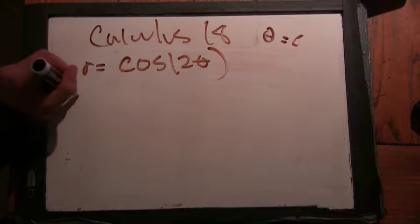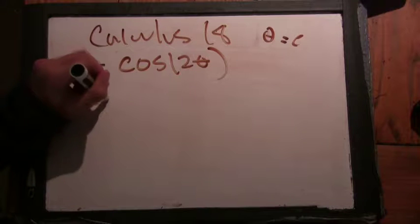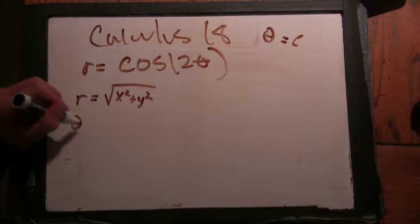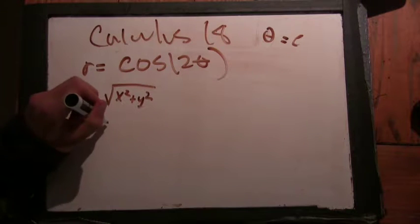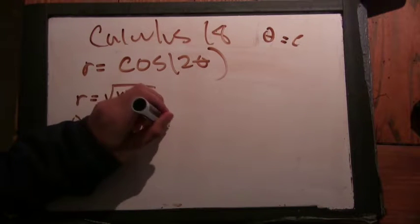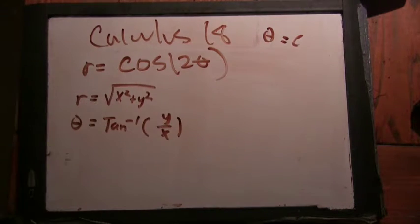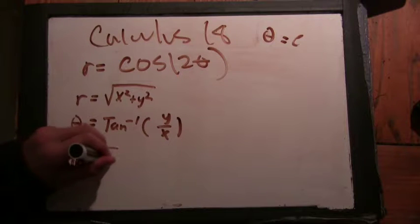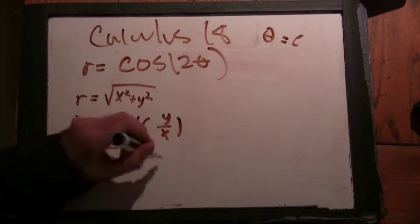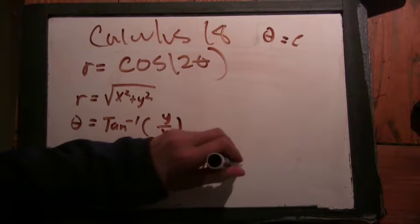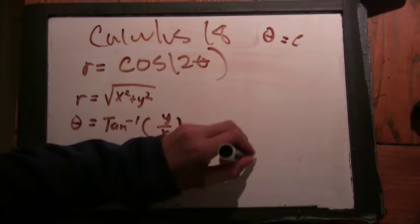So we know r equals square root of x² + y². And θ equals arctan(y/x). Okay, that's right. So we can say √(x² + y²) = cos(2·arctan(y/x)).